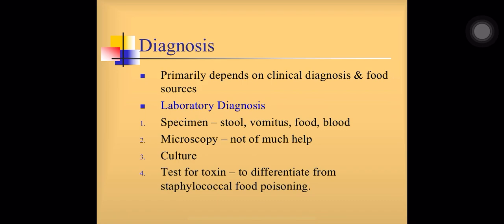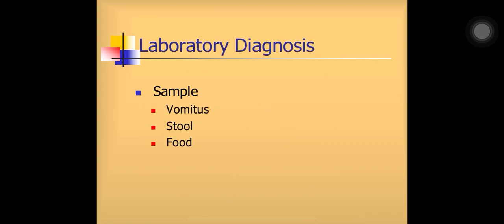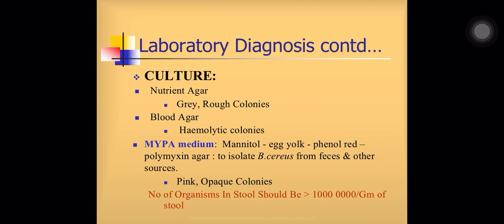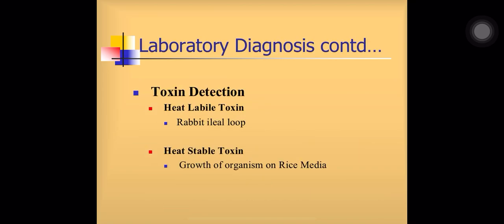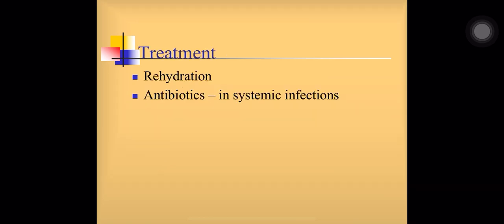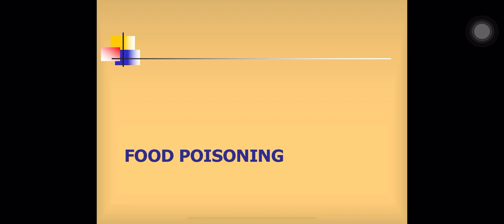Diagnosis of Bacillus cereus: specimen includes stool, vomit, food, and blood. Microscopy is not of much help. In culture, MYPA medium can be used and tests for toxin detection can be done to differentiate from staphylococcal food poisoning. Treatment with rehydration and antibiotics for systemic infections.